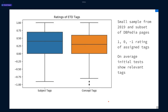We did some subjective rating of these subject and concept tags on Ohio ETDs. We took a sample of 250 of these, and we had four raters look at them and rate them: 1 for a relevant tag, -1 for being irrelevant, and 0 for half hitting the mark. What we found on average was that our tags were more often than not relevant. So again, this is a good sign that we were moving in the right direction.